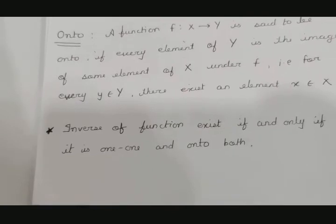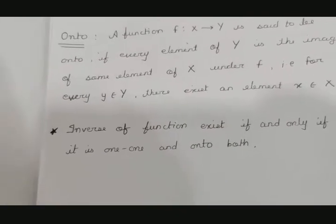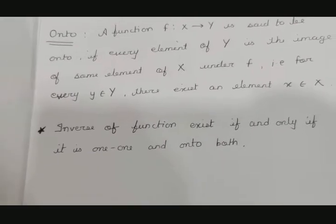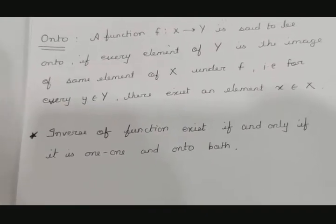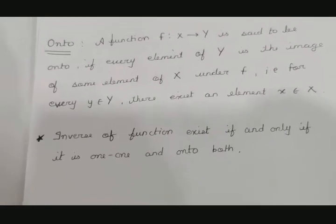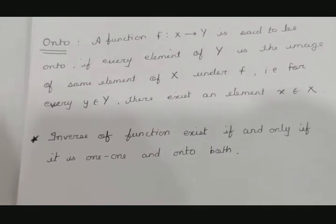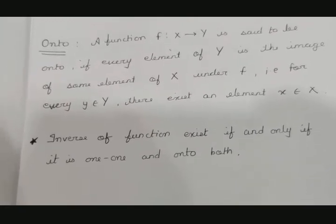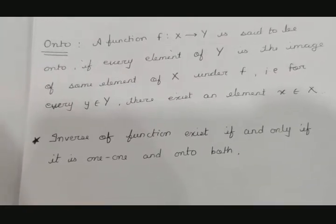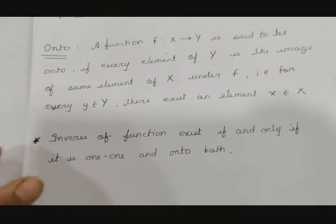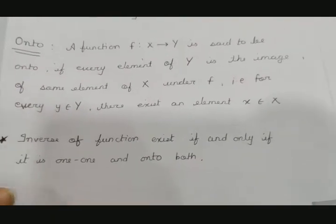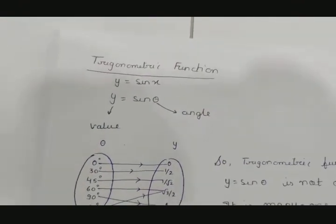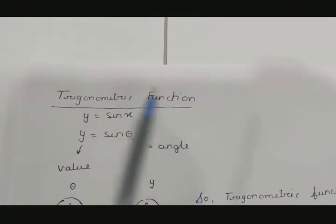Now the inverse exists when the function is both one-one and onto. Let's recap all three terms clearly: inverse exists when function is one-one and onto. Trigonometry: there are six trigonometric ratios — sin θ, cos θ, tan θ, cosec θ, sec θ, cot θ. Function: every element in x should have a unique image in y. Now let's talk about trigonometric functions — there are six, the first being y = sin x.